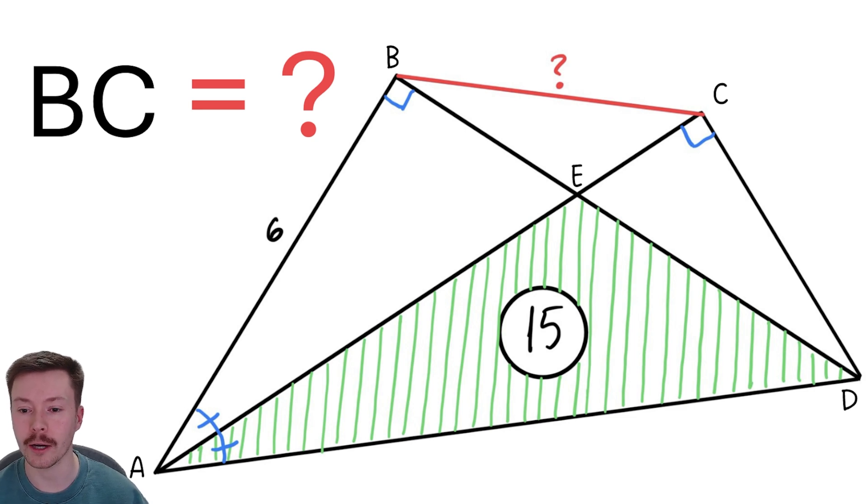We've also got the angle BAC is equal to CAD. Okay, so those angles are equal. We've got two right angles as you can see, one at B so ABD, and one at C, ACD. Can you find the length from B to C?